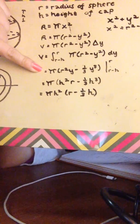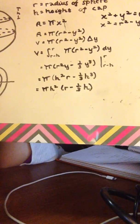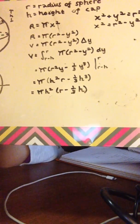Simplify in terms of y and you end up with pi h squared times the quantity r minus one third h, and that's the final answer.